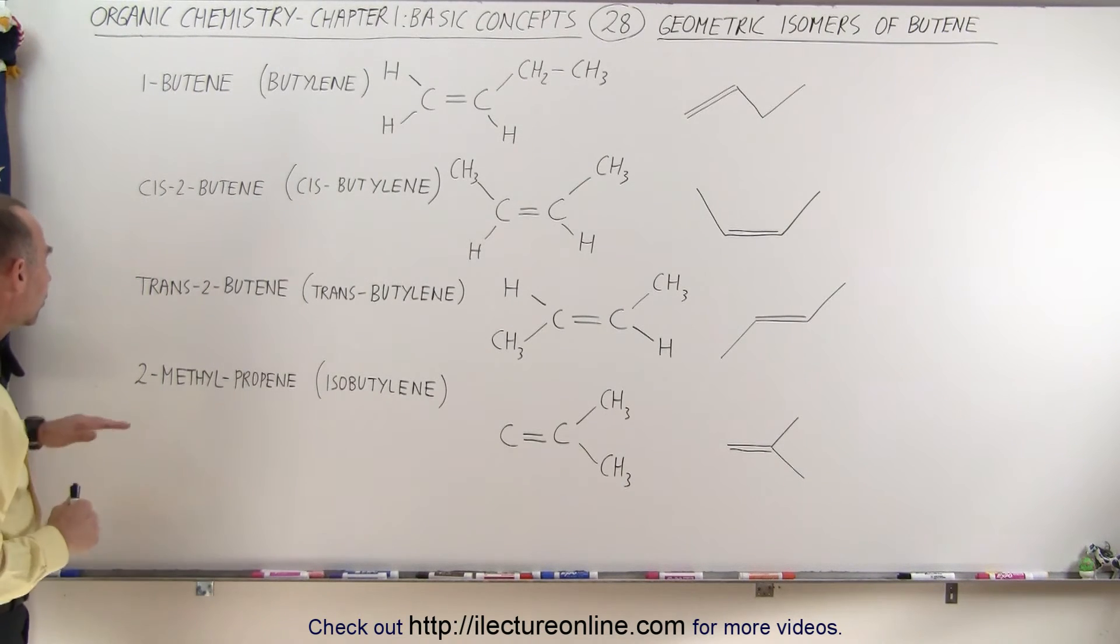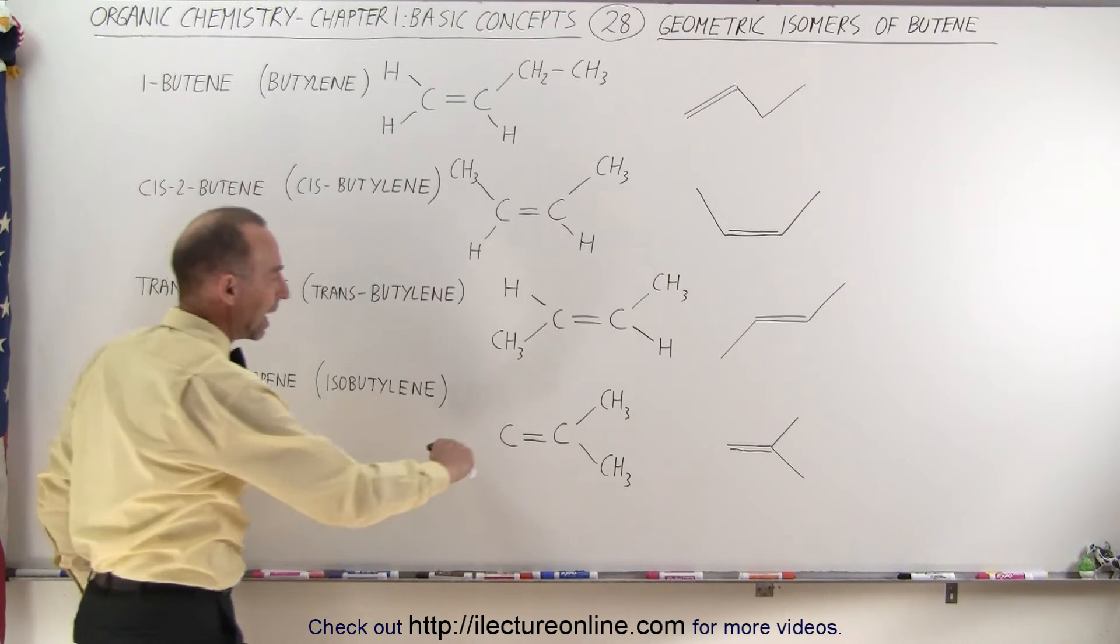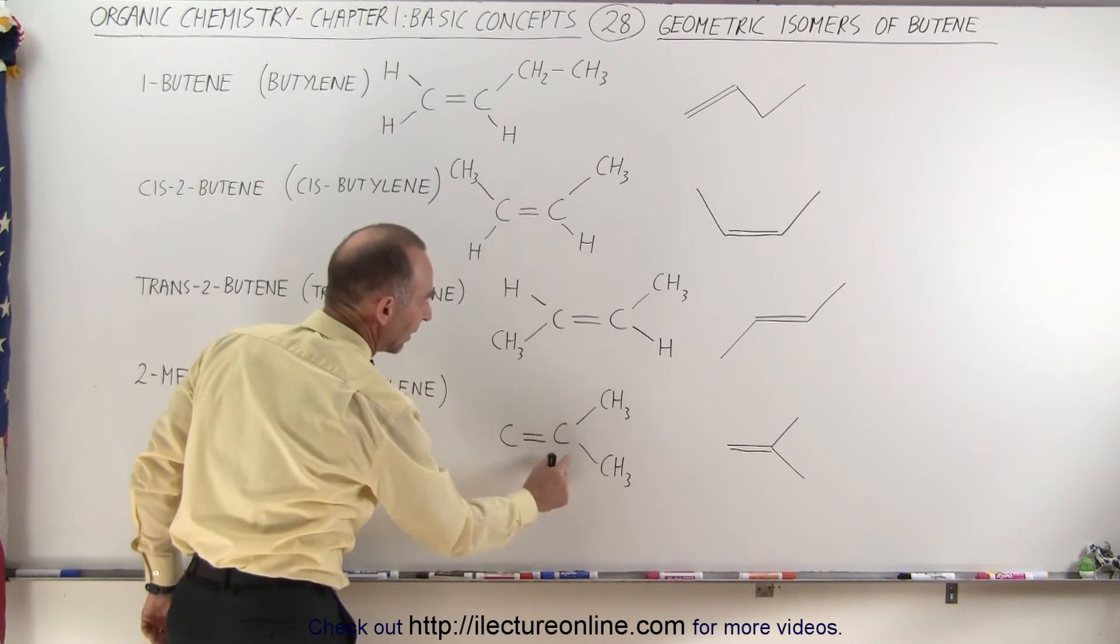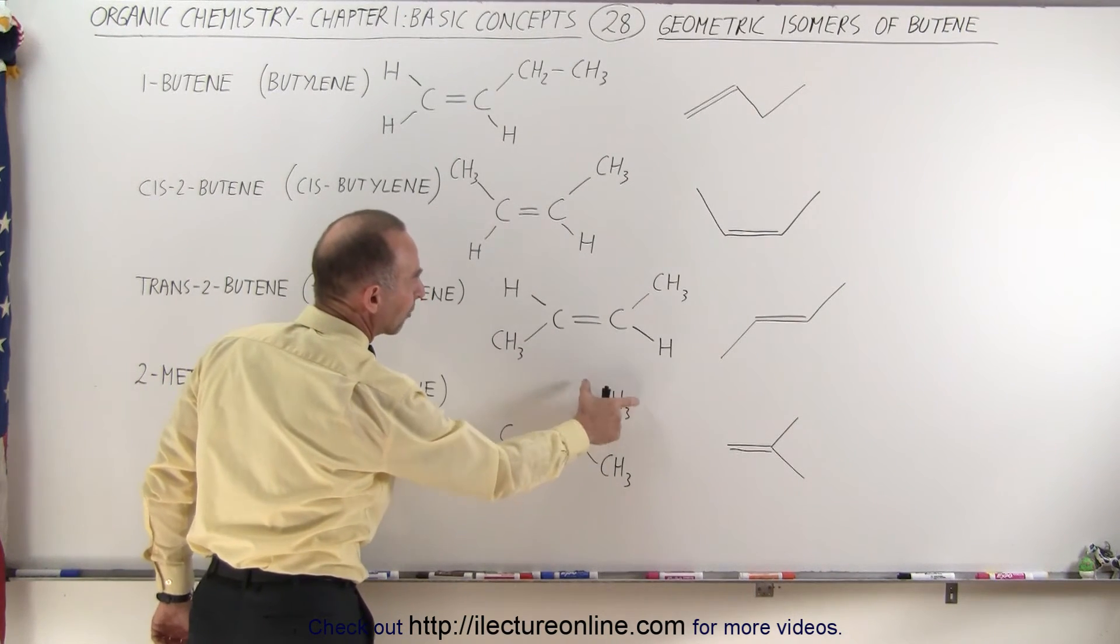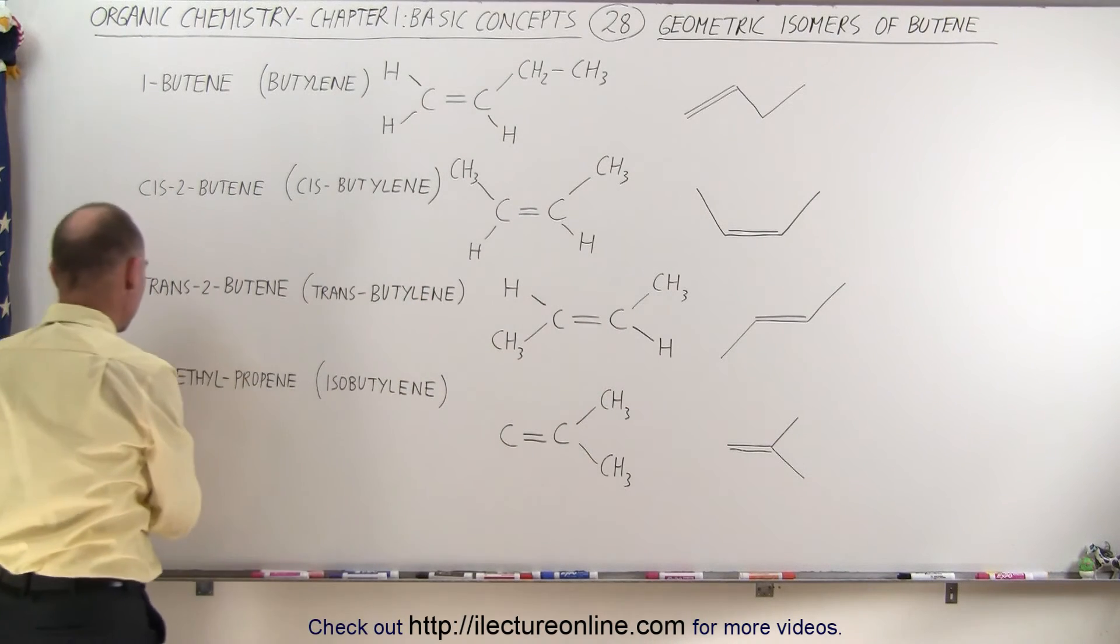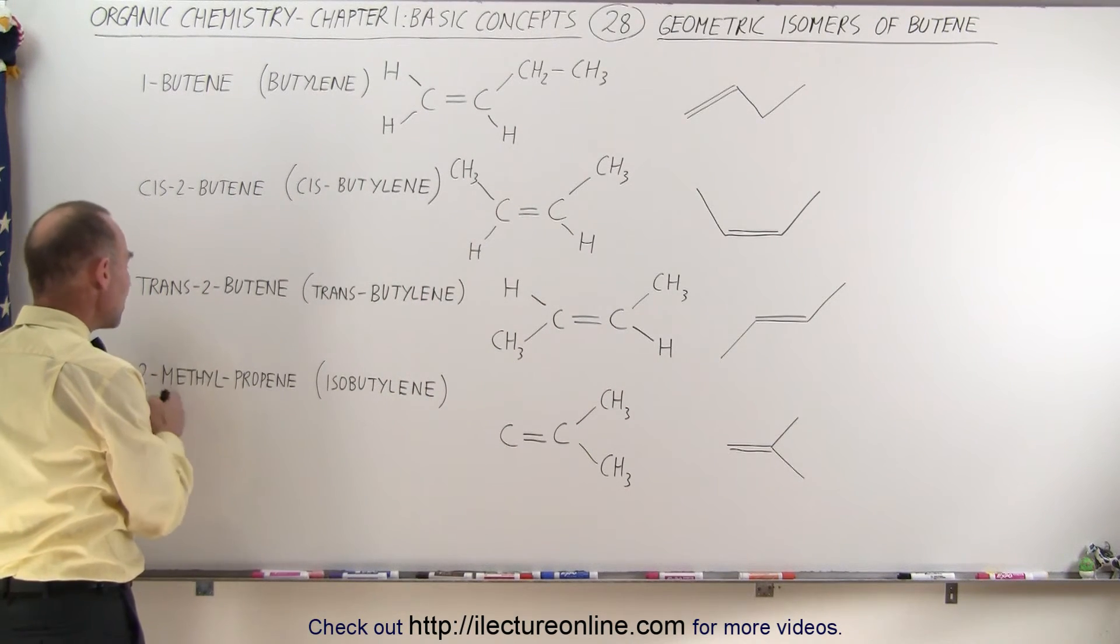On the fourth molecule, we have, as a very systematic name, an actual propene. Propene means we have three carbons with a methyl group attached to it. The two means to the second carbon in the chain. So here we have a propene chain. The second carbon has a methyl group attached to it. So the technical name can be 2-methylpropene.